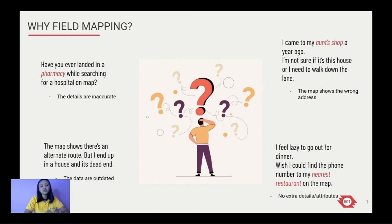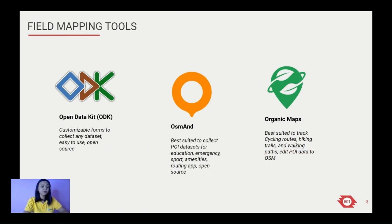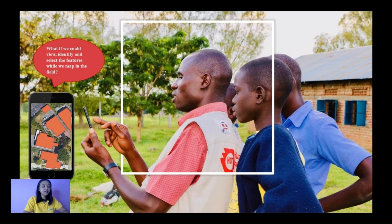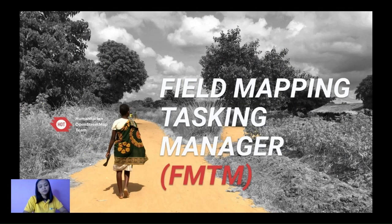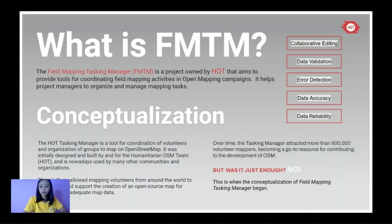Field mapping is basically going out into the field and collecting information — it could be of a feature, an individual household, or any sort of condition that exists in the real world. The more attributes a dataset has, the more comprehensive and useful it will be. There are different field mapping tools we can use to gather datasets, such as ODK, OSM, and Organic Maps, and many more. This is where we're trying to streamline field mapping activities, and we've developed the Field Mapping Tasking Manager.